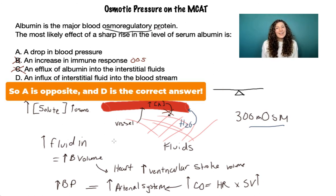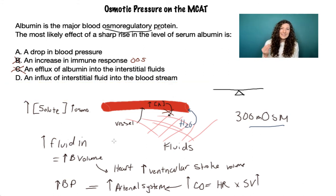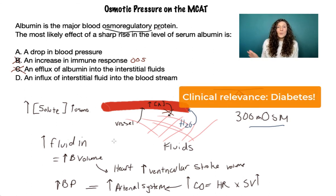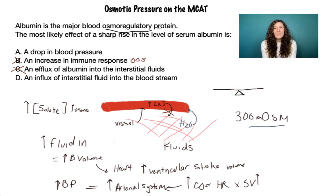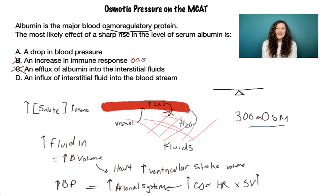You can memorize: increasing blood volume leads to increasing blood pressure. An increase in solute in the blood vessels equals an increase in blood volume, with a downstream effect of increasing blood pressure. If this were chronic — for example, consistently elevated blood glucose — blood pressure would rise. That's why one symptom of diabetes is increased blood pressure. The bottom line is to recognize when they're asking about osmosis, look for terms like osmoregulation, osmolarity, milliosmoles, and focus on water movement in response to increased solute in one compartment.